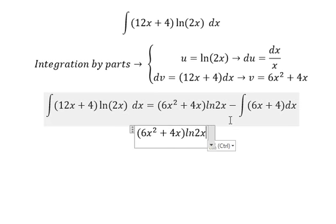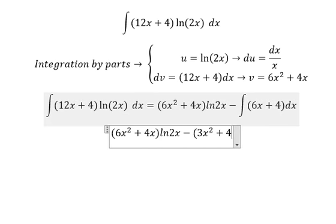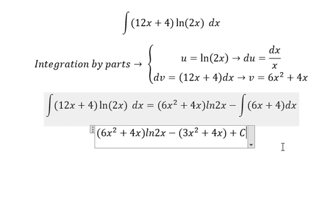And we got the final answer 3x squared plus 4x, and we put C as the constant. That's it. Thank you for watching.